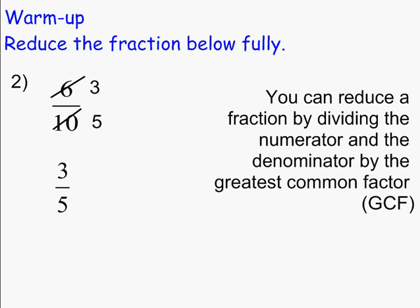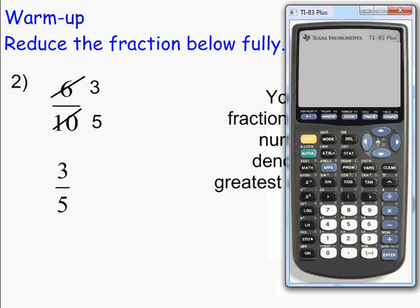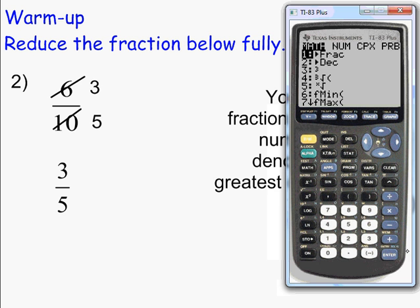Now, there is a way to do this on the TI-83 graphing calculator. Originally we had 6 tenths, so we are going to write that as 6 divided by 10. You are going to press math, click on fraction, hit enter, and it gives you the reduced form of the fraction, which is 3 fifths — what we got before with our greatest common factor method.